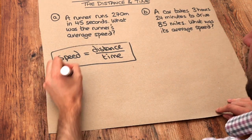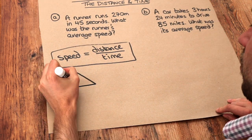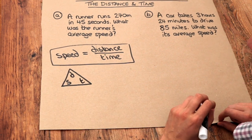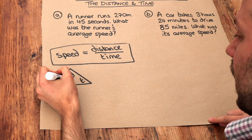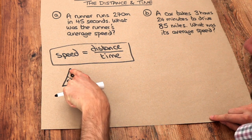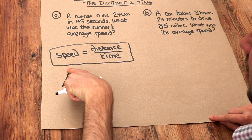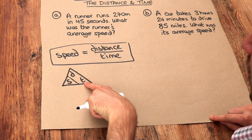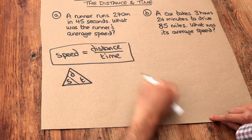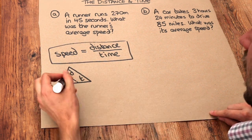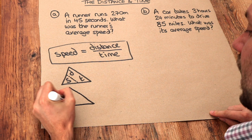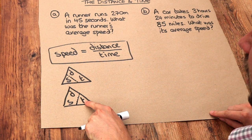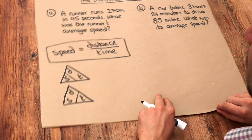Sometimes this is taught with something called an SDT triangle. We've got S, D, and T, and if we put a line here we can see that speed is distance over time because the distance is above the time. The advantage of this triangle is that I can add the line in different places to get different formulae — for example, time is distance over speed.